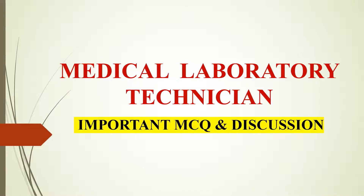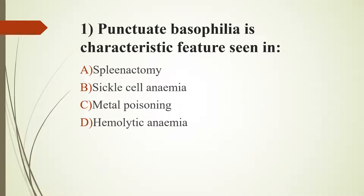First question: Punctate basophilia is a characteristic feature seen in which option? Option A, splenectomy. Option B, sickle cell anemia. Option C, metal poisoning. Option D, hemolytic anemia. The answer is Option C, metal poisoning.